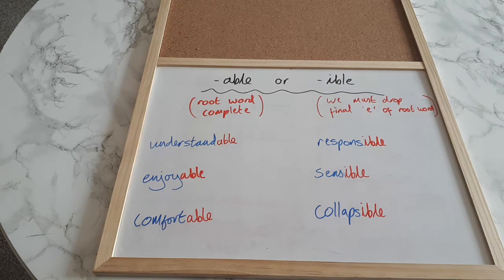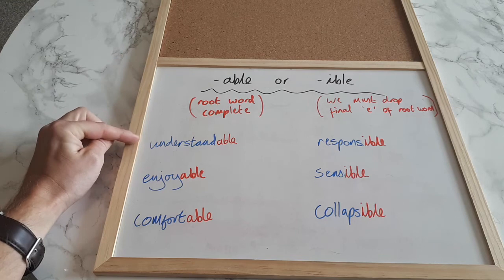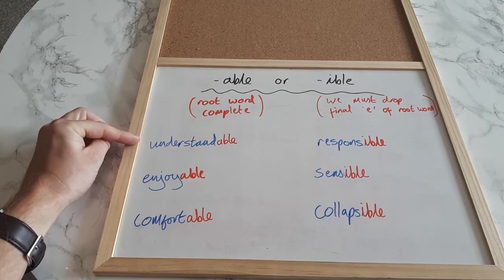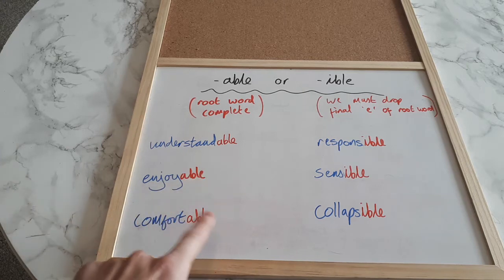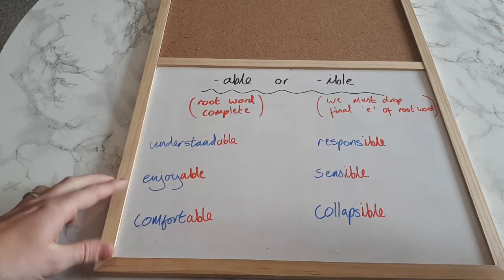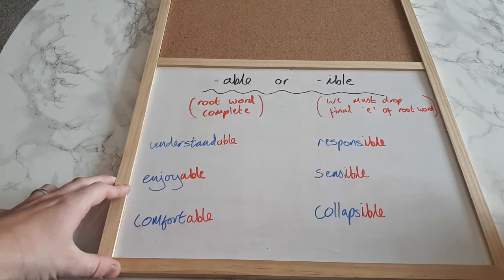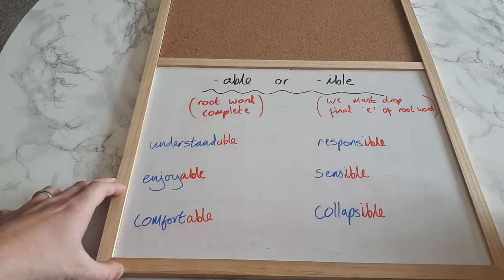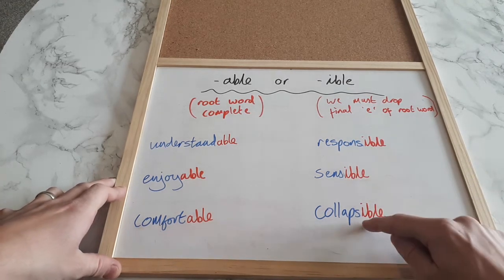So there we go. Just a quick recap of those two rules. If it's an -able ending word then you leave the root word as it is. You don't make any changes and you simply add -able to the end. You are able to do something. And then if it's an -ible ending you must lose the final e. So it's always those words that end with an e and add -ible to the end.